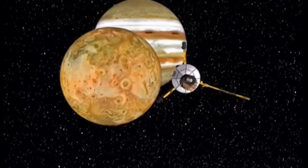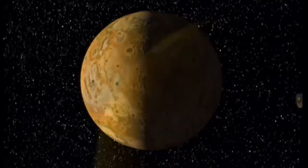Le premier d'entre eux, Io, est tiraillé entre l'attraction de Jupiter et celle d'un satellite proche. Il en résulte des éruptions volcaniques, photographiées pour la première fois par la sonde Voyager.